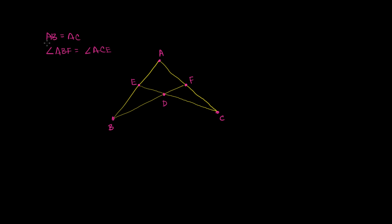Given this diagram, we know that the length of segment AB is equal to the length of AC — that's this whole side equal to this entire side. We also know that angle ABF is equal to angle ACE, meaning this angle right over here is congruent to that angle right over there. Now the first thing I want to prove is whether BF has the same length as CE.